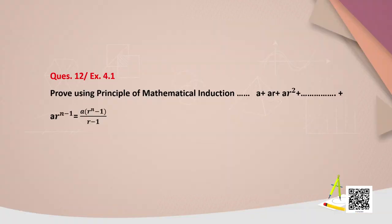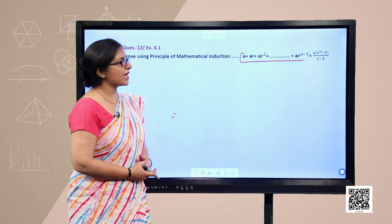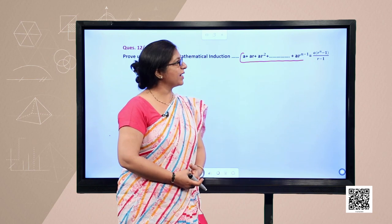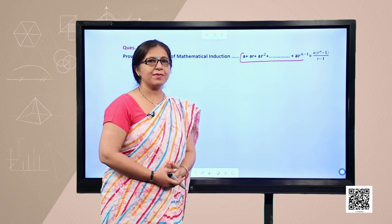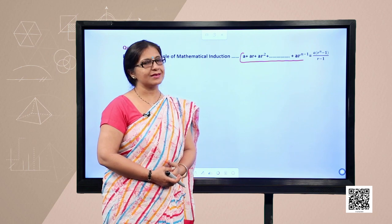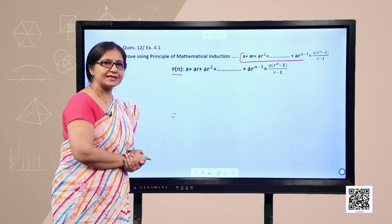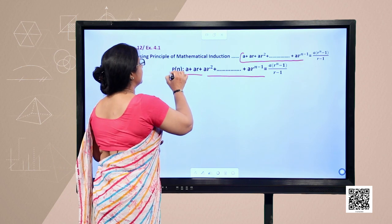Let us understand with the help of an example. This is question number 12 of exercise 4.1: prove using the principle of mathematical induction. The statement is the sum of a GP: a + ar + ar² + ⋯ + ar^(n−1) equals a(rⁿ − 1)/(r − 1). We first define this statement as P(n).